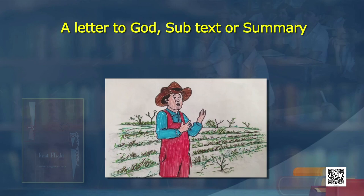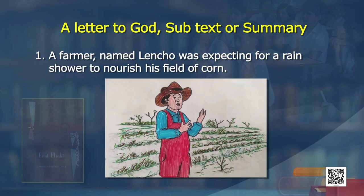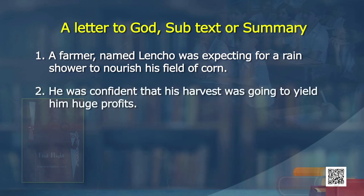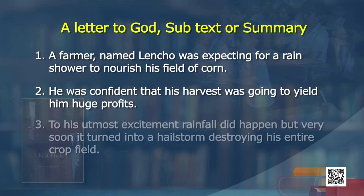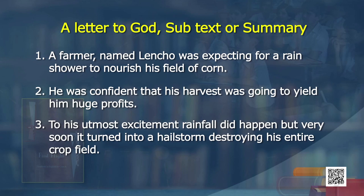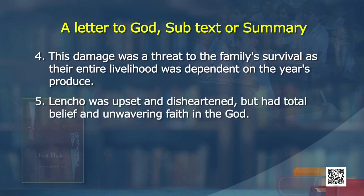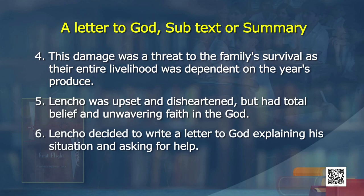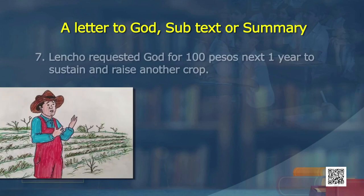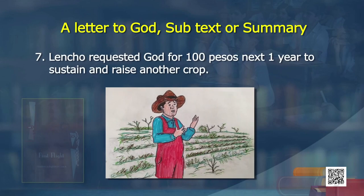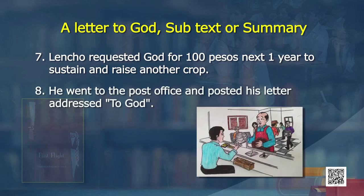Letter to God — Subtext and Summary. A farmer named Lencho was expecting a rain shower to flourish his field of corn. He was confident that his harvest was going to yield him huge profits. To his utmost excitement, rainfall did happen, but very soon it turned into a hailstorm, destroying his entire crop field. This damage was a threat to the family's survival as the entire livelihood was dependent on the year's produce.